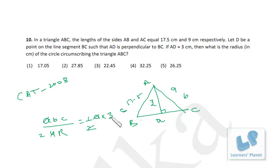So we have to find out the value of R. That is BC by 6, so that is 17.5 into 9 by 6. That is the value of the circumradius.